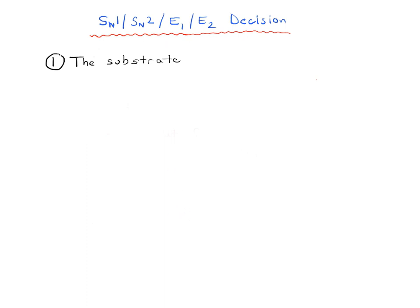So, part one: the substrate — what can this tell us? Let's draw an example. Imagine we are looking at a primary alkyl halide — I'm going to draw in an iodine here. What decisions can we make about a primary alkyl halide? What do we know about the SN1, SN2, E1, and E2?